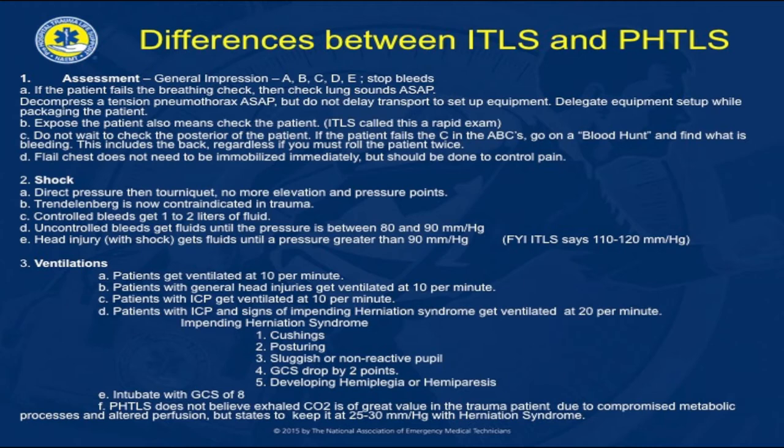ITLS and some paramedic programs stress between 110 and 120 millimeters of mercury. Ventilations are very similar, although for patients who have intracranial pressure and signs of impending herniation, ventilation should be at a rate of 20 breaths per minute. Impending herniation includes Cushing's, posturing, sluggish or non-reactive pupils, Glasgow Coma Scale drop by two points or more, or developing hemiplegia or hemiparesis. We will discuss these when we talk about head injuries and shock.